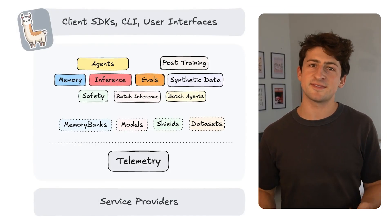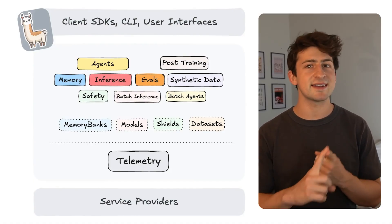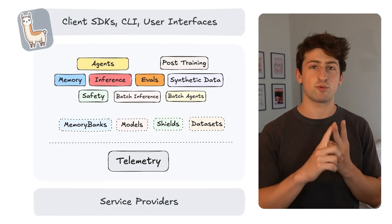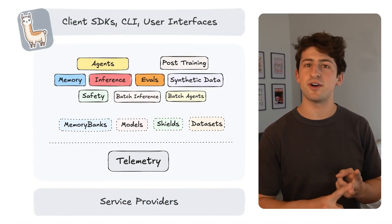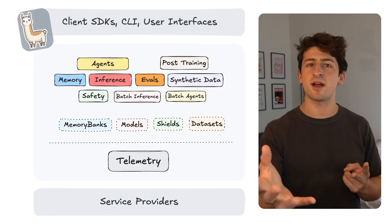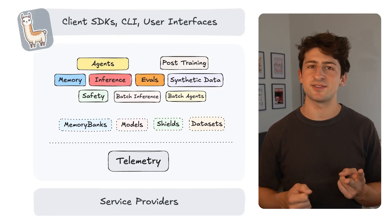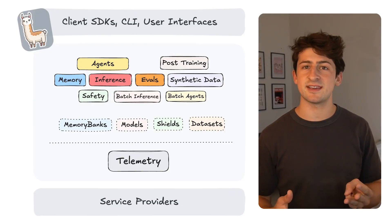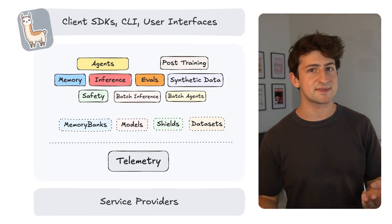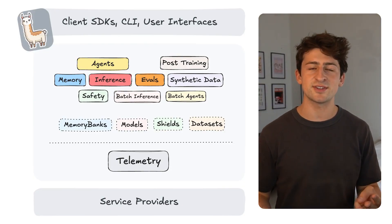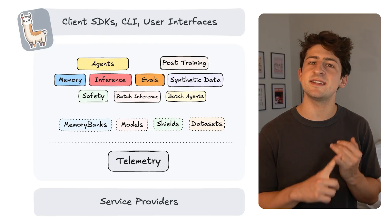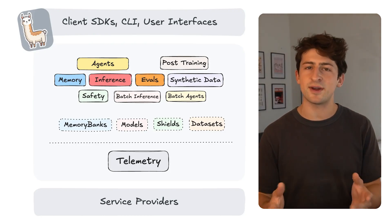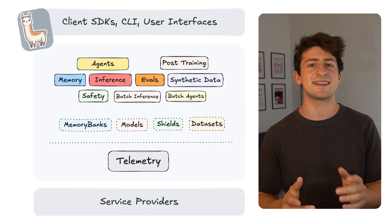At its core, Llama Stack gives you several components: first, inference — generating text, code, or other outputs from models. Next, RAG or retrieval-augmented generation, which lets your model access external data. Third, agents — multi-step reasoning with tool use, using perhaps MCP servers. We'll also be covering safety, telemetry, and evaluation so that you can build reliable and production-ready systems.